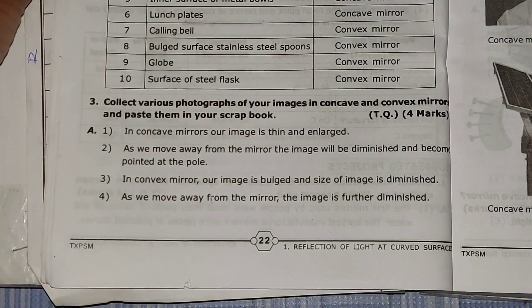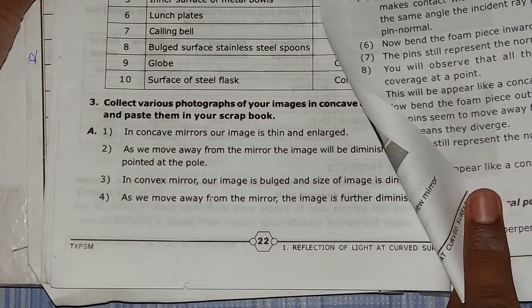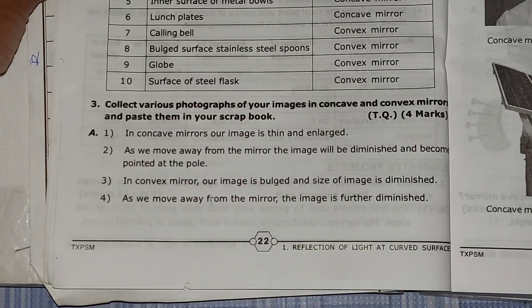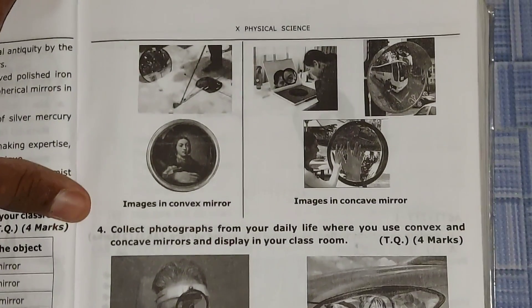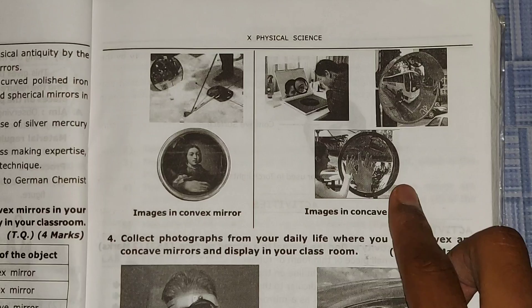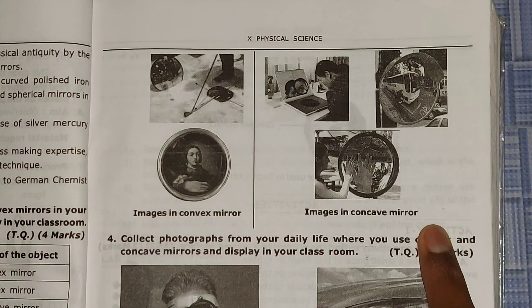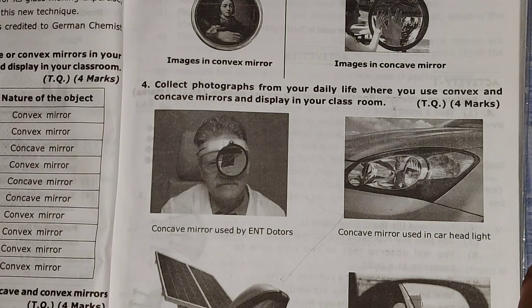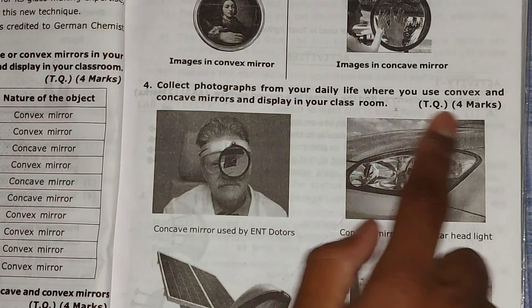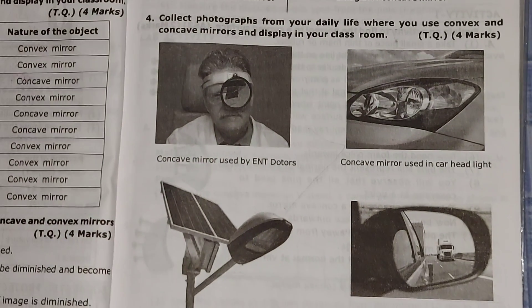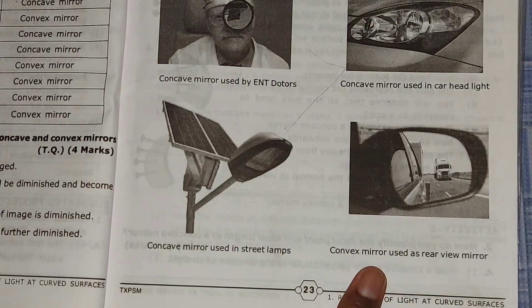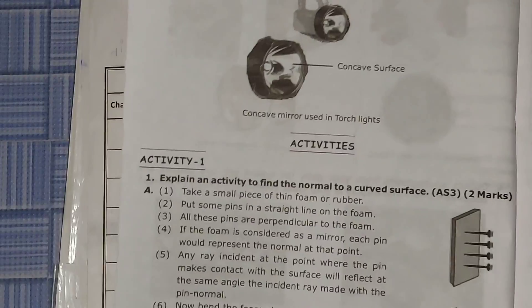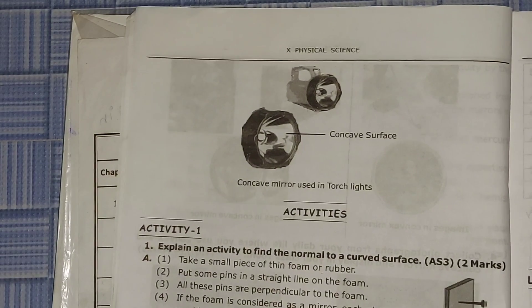In my guide there are a total of four questions — the third question continues onto the next page with some pictures. You can see those pictures here — the third question answer ends here. In my question bank there is one extra question not in the textbook — you can see the extra question and its answer here.